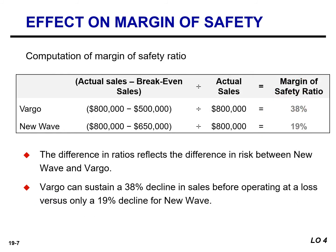We can also evaluate the relative impact that changes in sales would have on the two companies by calculating the margin of safety ratio. The difference in the margin of safety ratio also reflects the differences in the risk between the two companies. Vargo Video could sustain a 38% decline in sales before it would be operating at a loss, whereas New Wave could sustain only a 19% decline in sales before it would be in the red.